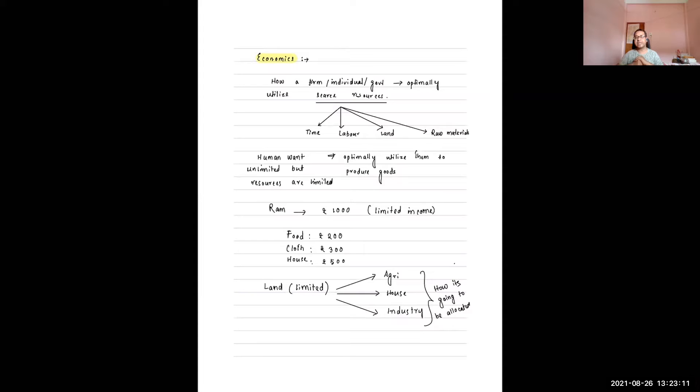For example, Ram has a thousand rupees income. Ram cannot spend his money in any way he likes. He has to decide whether to spend on food, clothing, rent, or entertainment. If he spends all on entertainment, he will not have enough money to pay rent for his house. So he has to utilize his resources or his income in the most efficient way.